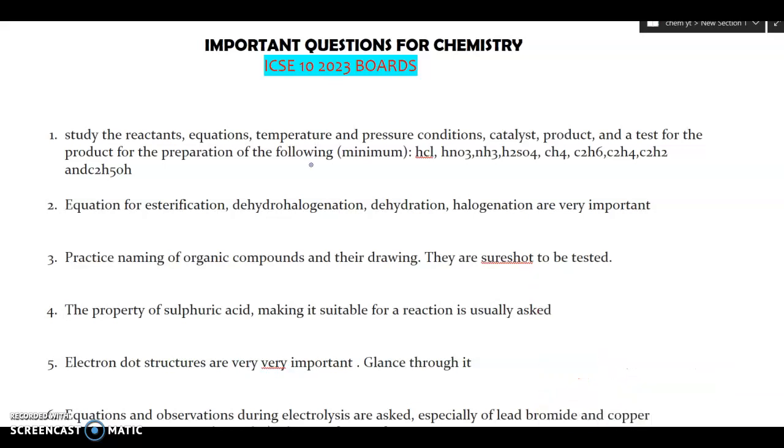So whenever you write any reaction, I'll take an example like the Haber's process. We have N2 plus H2 with this sign which gives 2NH3. We have to balance it accordingly, right?